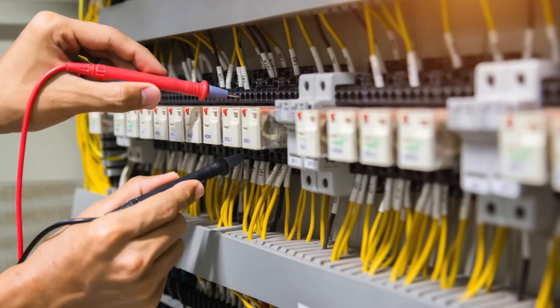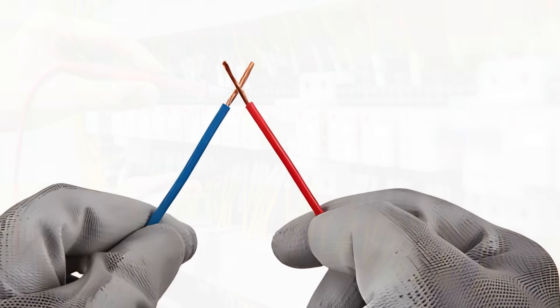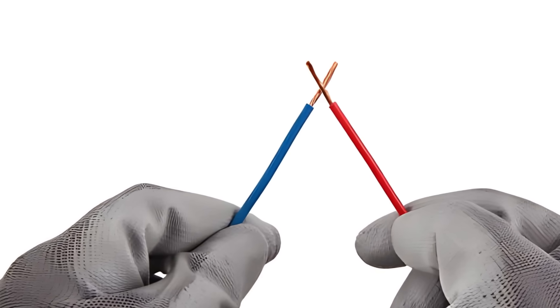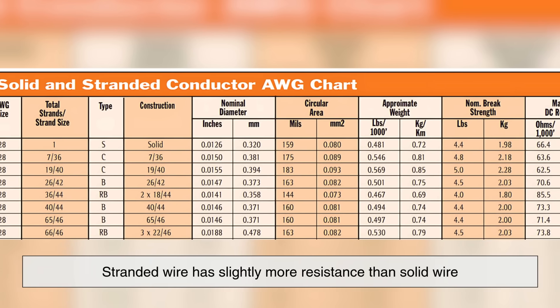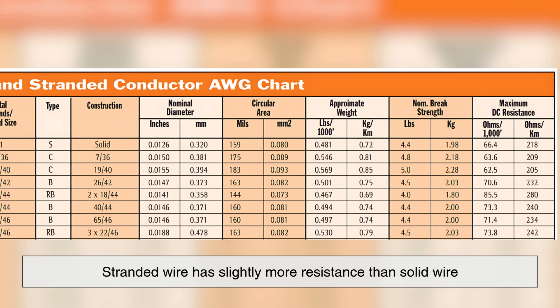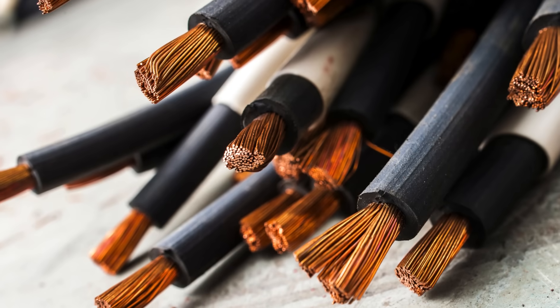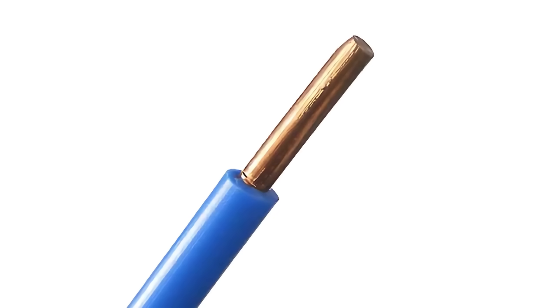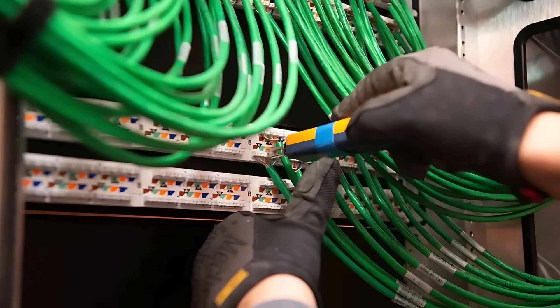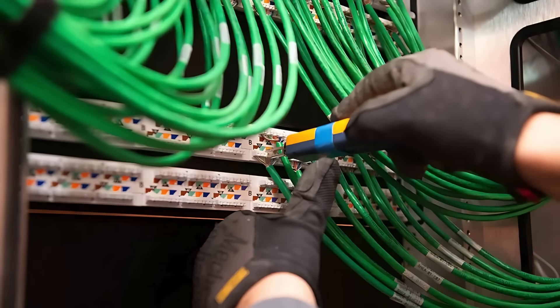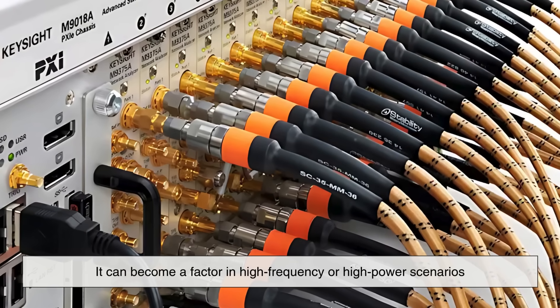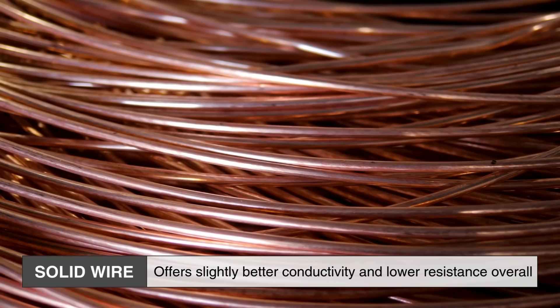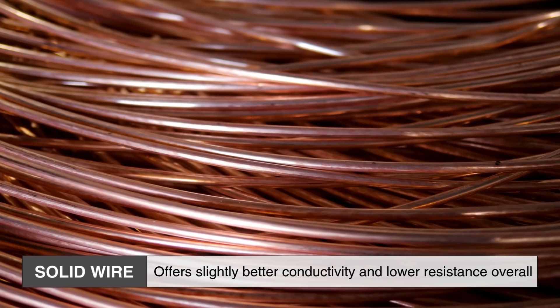Next, let's talk about electrical performance. Both types of wire conduct electricity just fine, but there are some subtle differences. For example, stranded wire has slightly more resistance than solid wire. That's because the current has to travel through multiple small paths instead of one solid core. The difference is usually negligible for short distances or low current applications, but it can become a factor in high frequency or high power scenarios.